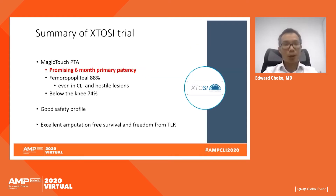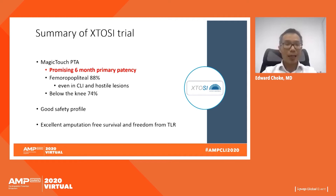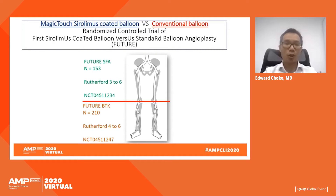In summary, Magic Touch PTA showed promising six-month primary patency — approximately 88% for femoral-popliteal even in critically ischemic patients with hostile lesions, and 74% for below-the-knee. It showed a good safety profile with excellent amputation-free survival and freedom from target lesion revascularization at six months. The ECSTASY trial is a pilot study in a small single-arm cohort; we have now progressed to a randomized controlled trial of sirolimus-coated balloon versus standard balloon angioplasty.